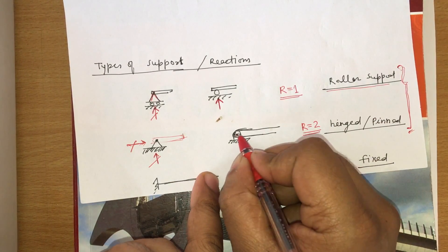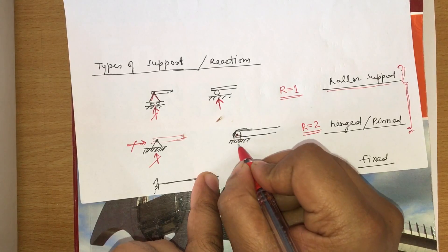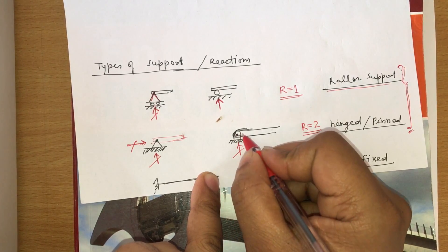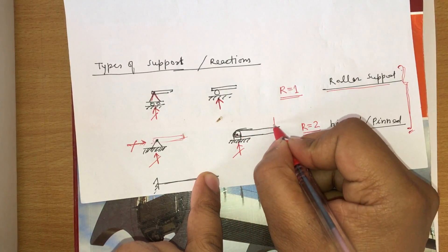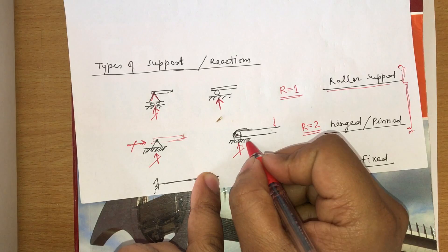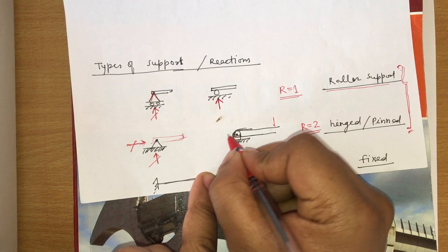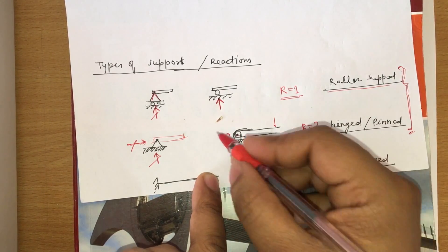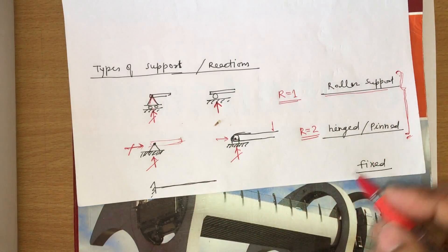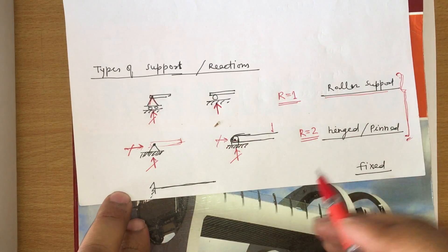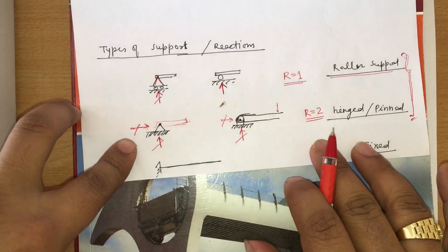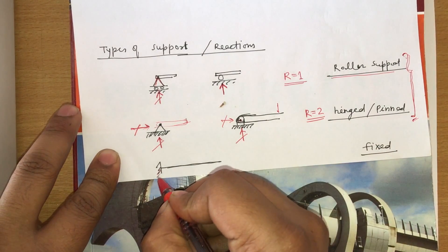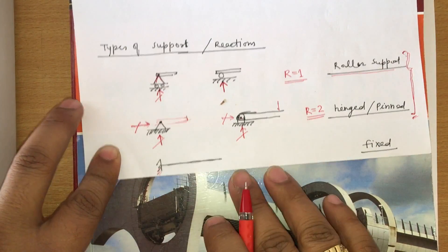In the case of a hinge support, R is equal to 2 — total reactions are two. Assuming the beam is fixed, a load cannot pass out here because there is a hinge, so only two reactions can be transferred.